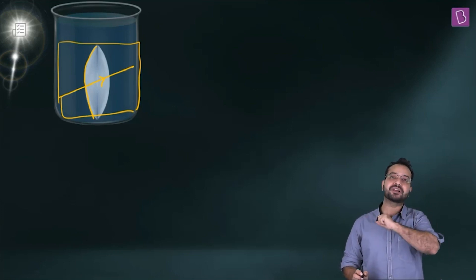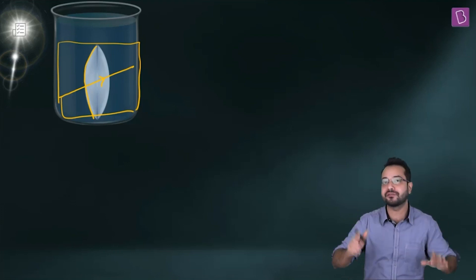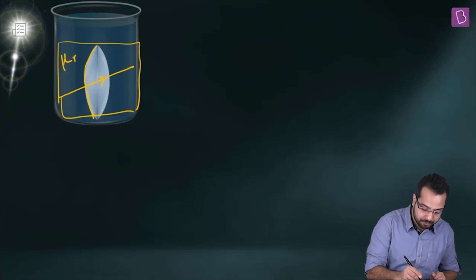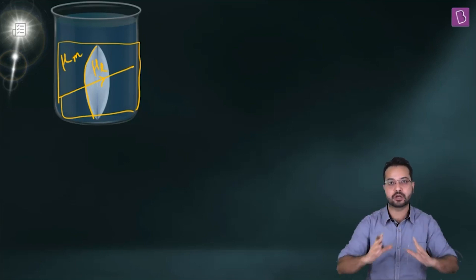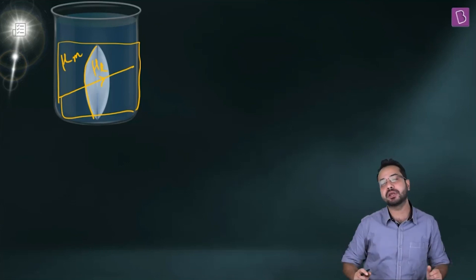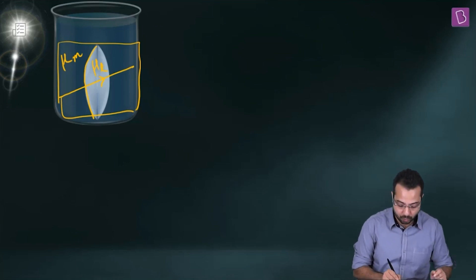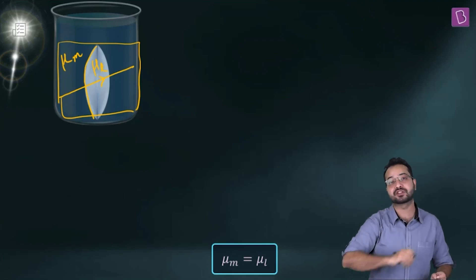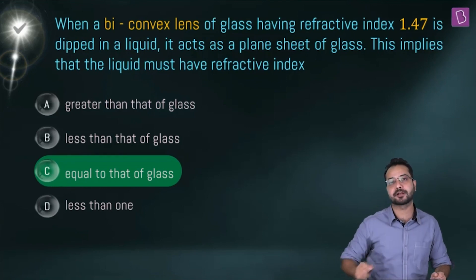Refraction occurs when light travels from one medium to another with a different refractive index. For no refraction to occur, the refractive index of the liquid must equal the refractive index of the lens. With equal indices, there is no change in medium, and the light ray passes undeviated. The answer is option C.